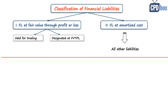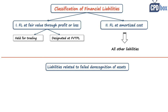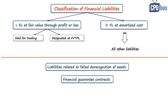Besides these two basic categories, IFRS 9 speaks about three other types of financial liabilities: liabilities that arise from failed de-recognition of financial assets and accounting to the extent of continuing involvement; financial guarantee contracts that you issue to someone else; and loan commitments to provide a loan at a below-market interest rate. That's the classification of financial instruments in short.